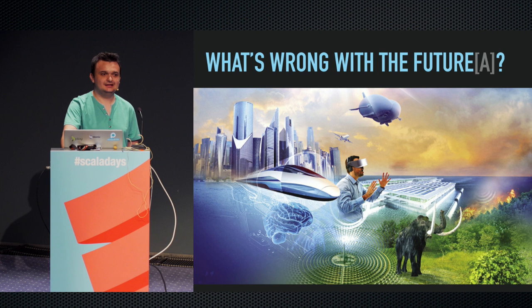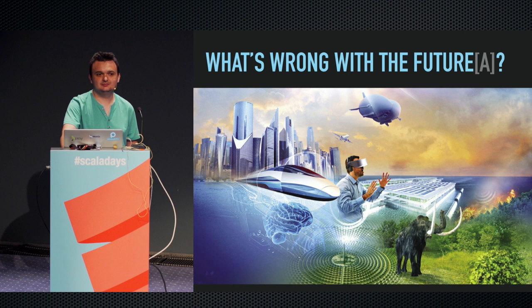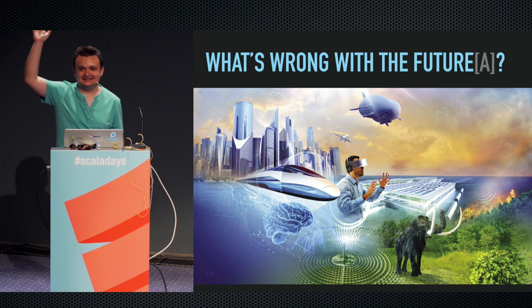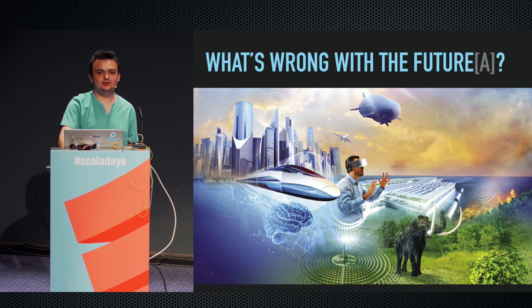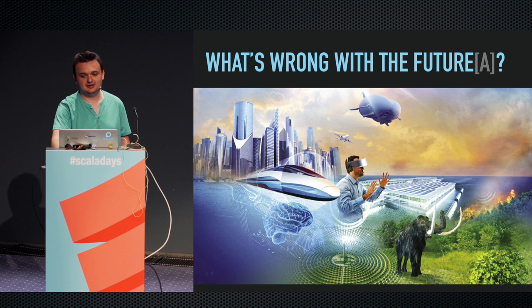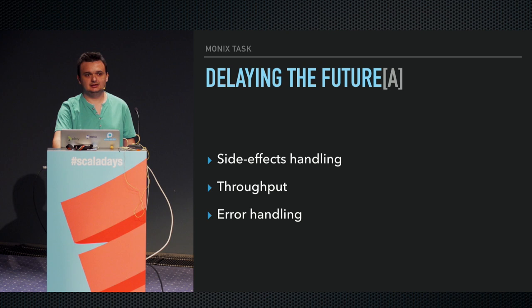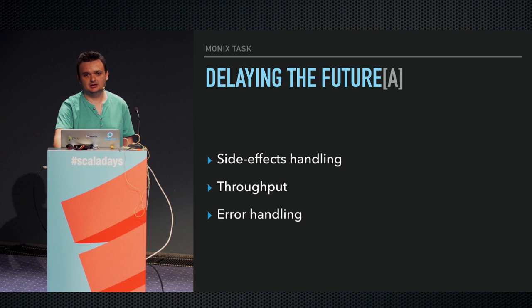Monix Task is often described as an alternative to Future. And who here loves Future? I love it as well — seriously. But as with all concurrency-related abstractions, there's no silver bullet. There are certain contexts where Future makes sense and certain contexts where it doesn't. Future does not make sense for controlling side effects, which is what we often want to do in functional programming — suspending them and pushing them to the edges of the program.